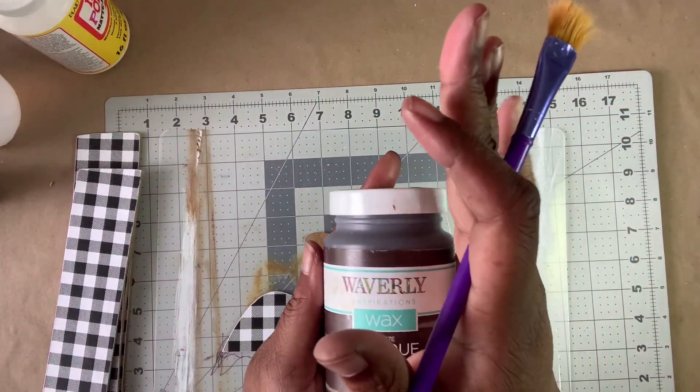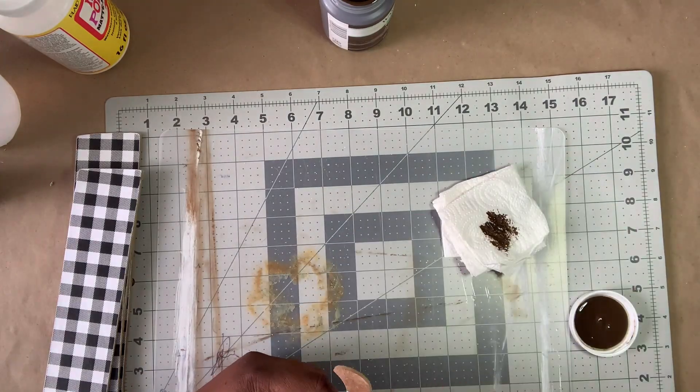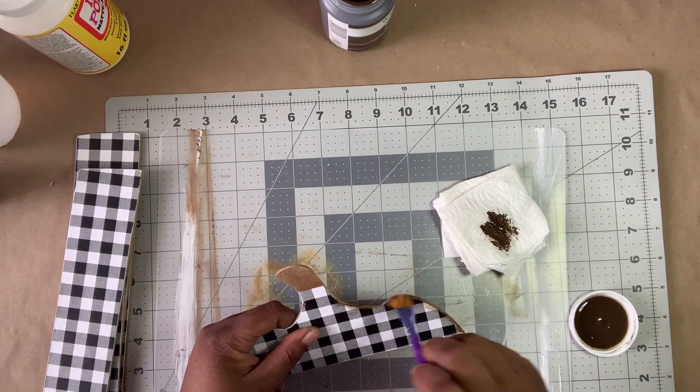Taking Waverly Antique Wax and a raggedy old brush, I distressed the individual pieces making sure to get the sides.